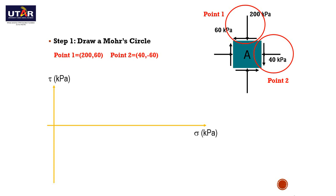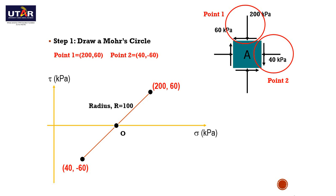Now we plot the coordinates for the two points in the tau versus sigma graph. We have to make sure that both tau and sigma have equal scale, else you can't get a correct Moore's circle. Point 1: (200, 60). Point 2: (40, -60). After that, we draw a straight line from point 1 to point 2. To find the center for the Moore's circle, we divide the straight line in half. For a soil element, the center should be located on the x-axis, sigma. Measure the distance from point 1 to the center, or from point 2 to the center, as the radius — the radius is 100. You may also use the trigonometry method to find the radius. With this information, we can use a compass to draw a circle with radius 100 and centroid at the center point. The Moore's circle is now complete.